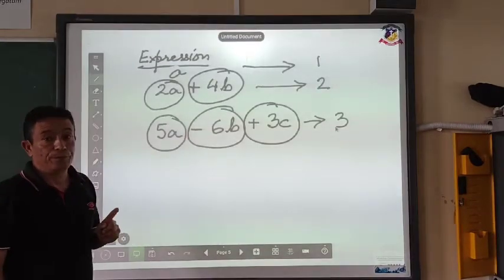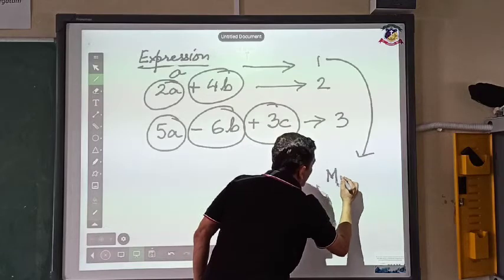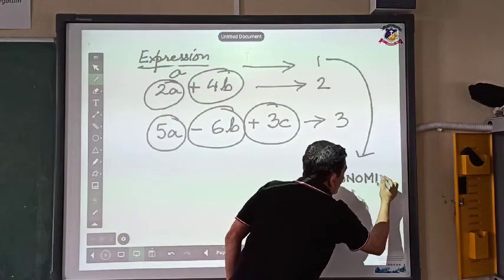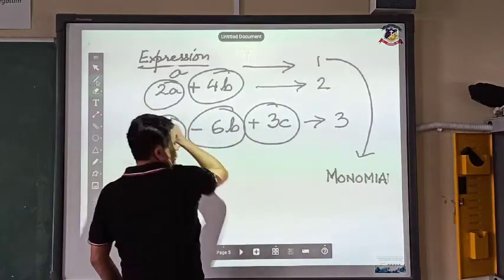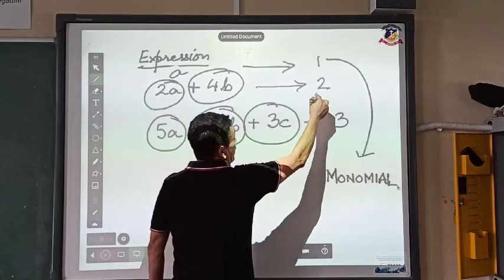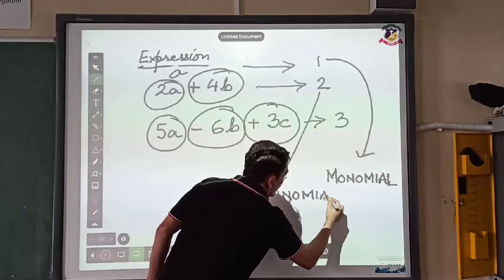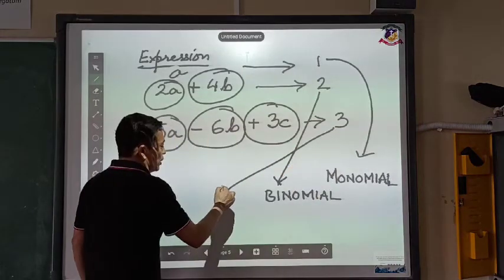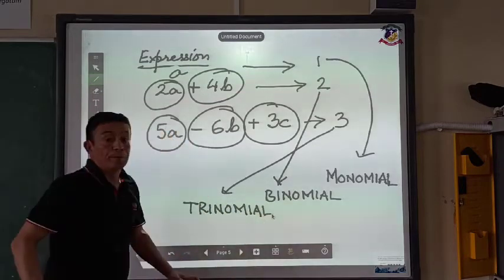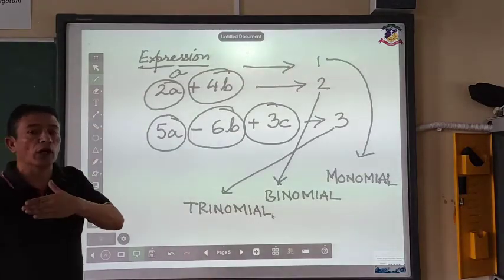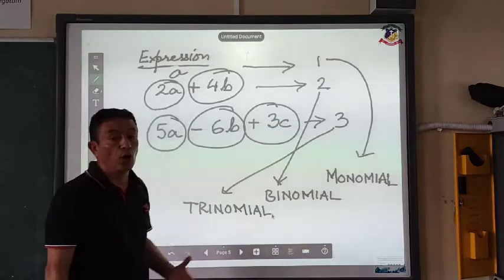When there is only one term, it is called a monomial. When there are two terms, we call it a binomial. When there are three terms, it is a trinomial. If there is more than one term, we can also call it a polynomial — meaning a binomial and a trinomial can both be called polynomials.